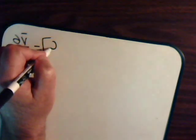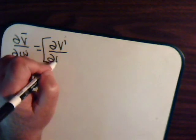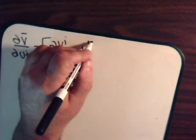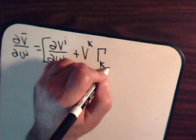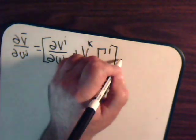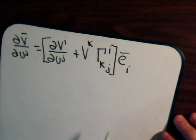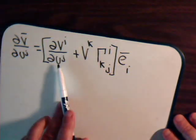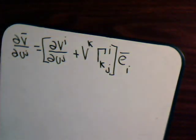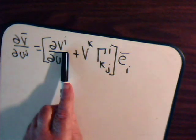So the expression we had — the partial derivatives of the components of the vector plus this term — in Cartesian coordinates that second term is zero. So in Cartesian coordinates, all we have to do is take the partial derivatives of the components of the vector, and we do get a second-order tensor that results. Remember, this was derived from the contravariant components of a vector.